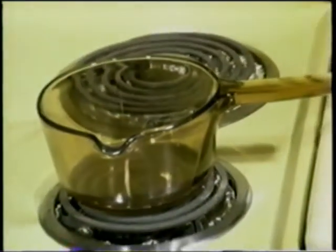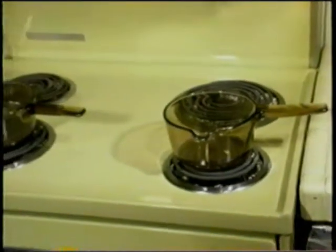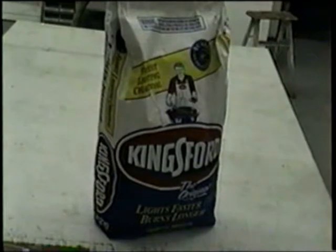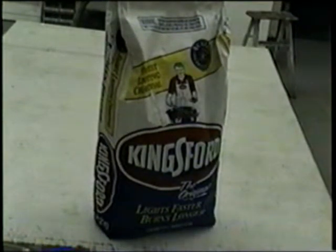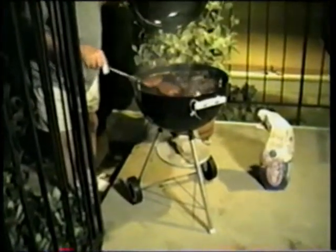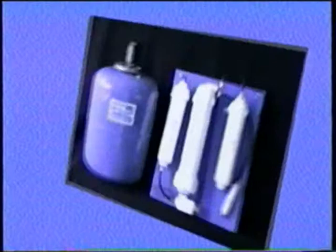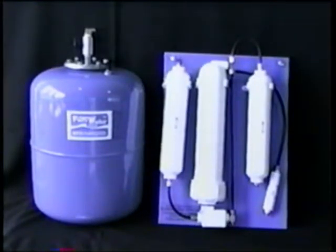Pure Water reverse osmosis removed the impurities the giant carbon filter, magnets and all, couldn't even touch. Look, this 20 pound bag of charcoal has twice as much charcoal as any of those filters. It costs less than $2 at the grocery store. You take it home and barbecue with it. Now that's a good deal. If you want a good deal on removing impurities from your tap water, get yourself a reverse osmosis system factory direct from Pure Water for just $259.